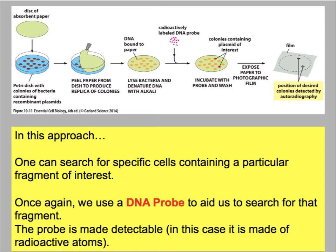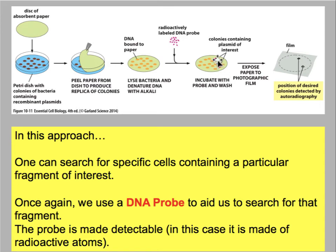How does one know which bacterial cells contain plasmids with the gene of interest? One strategy is to plate the bacteria onto a petri dish after they've been grown overnight. Then using the same type of nitrocellulose paper used in the Southern blot, we can transfer the bacteria onto nitrocellulose and probe the bacterial colonies with a radioactive probe. The probe will then highlight only those colonies of bacteria that contain the interesting fragments of DNA, and because we know where the colonies are, we can go back to the original plate and regrow only those colonies.